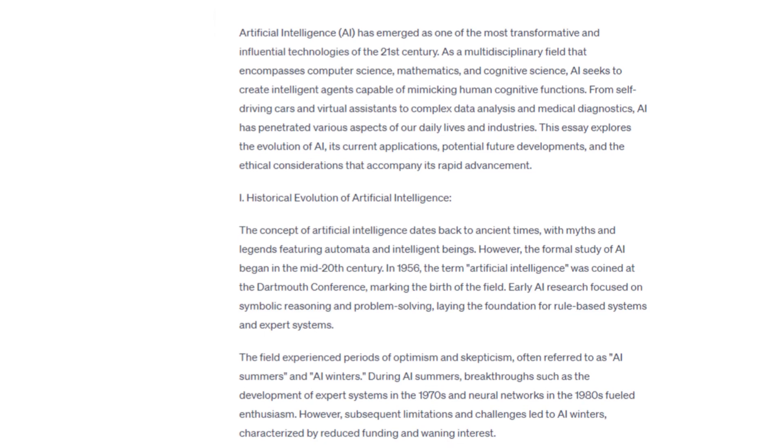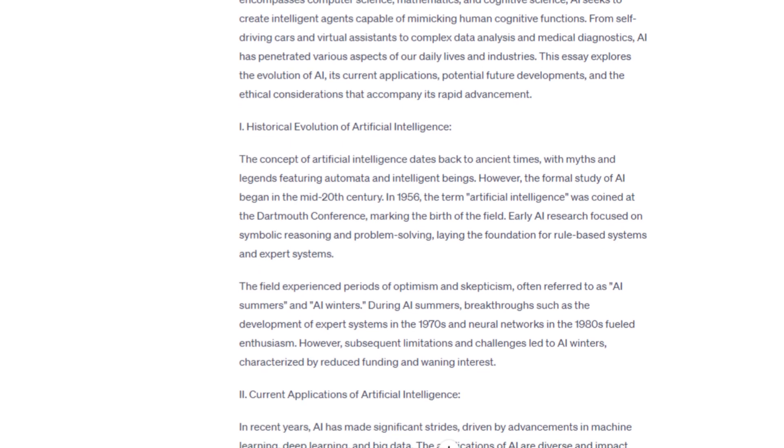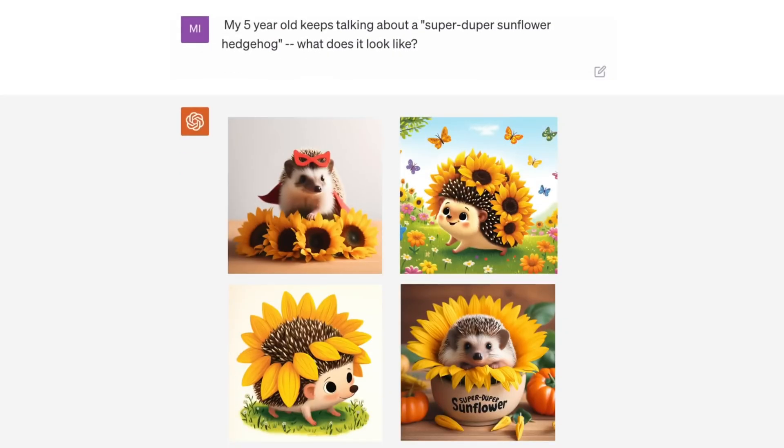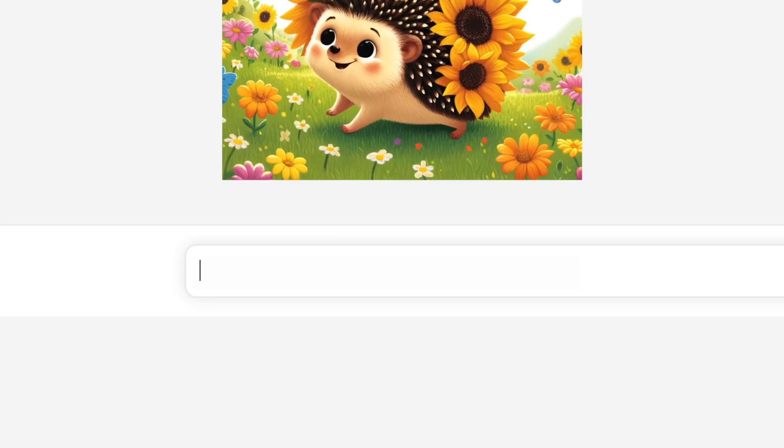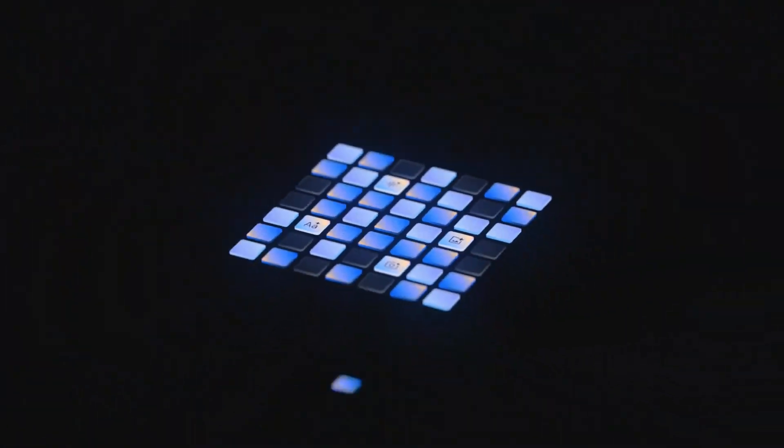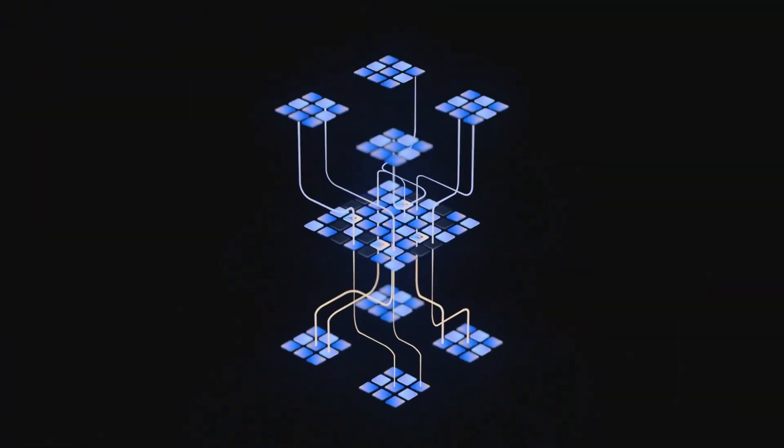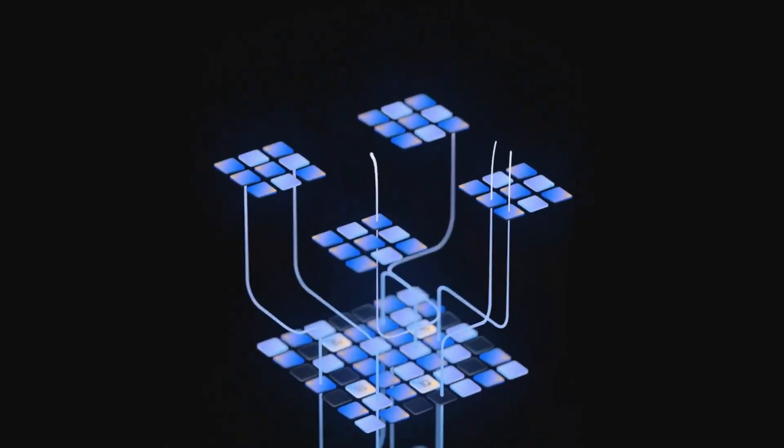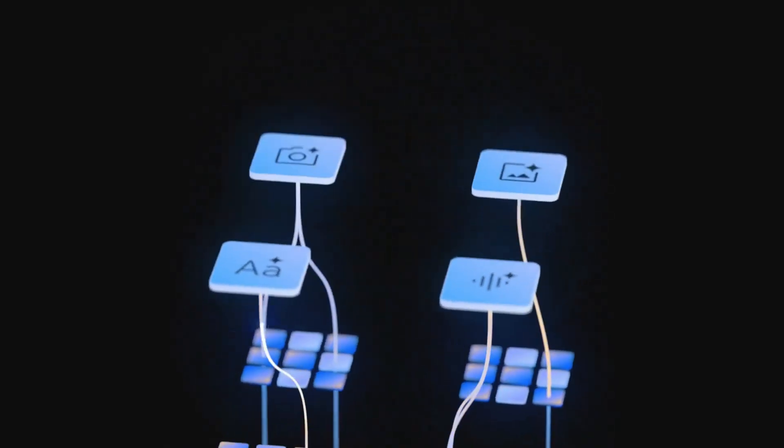Because GPT-4 is primarily focused on text, but can integrate with other modalities through add-on features like DALL-E 3 Vision. Whereas Google Gemini is designed from the ground up to process and understand text, images, videos, and audio.